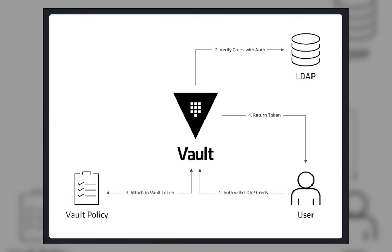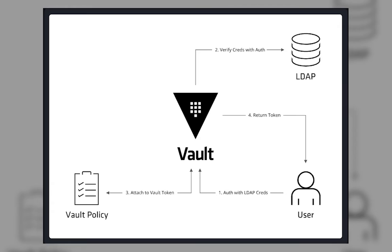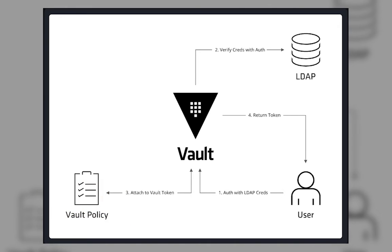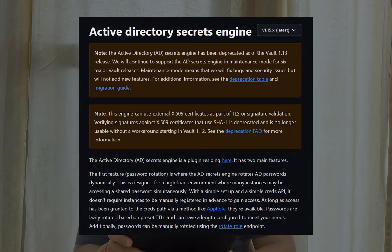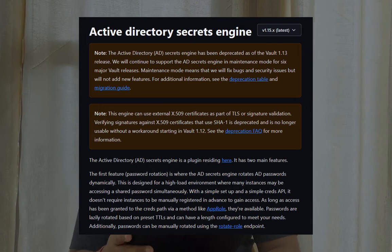The workflow goes like this: a user, via LDAP or whatever credentials you have configured — whether it's GitHub, GitLab, or some sort of LDAP credential — reaches out to Vault. Vault checks the token and checks the policy to see whether this particular identity has the right privileges. If yes, it lets the user see the particular directory, because the secret engine also works on a directory basis.